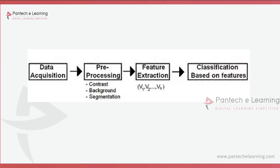Data acquisition is a common step for both training and classification. Pre-processing is also common for both — whenever you are training as well as classifying, pre-processing will be done. Inside pre-processing, steps like contrast adjustment, background removal, color conversion, smoothing, and filtering are applied. Feature extraction is then performed on the image provided, and finally we are able to classify what image it is based on the training we have done.